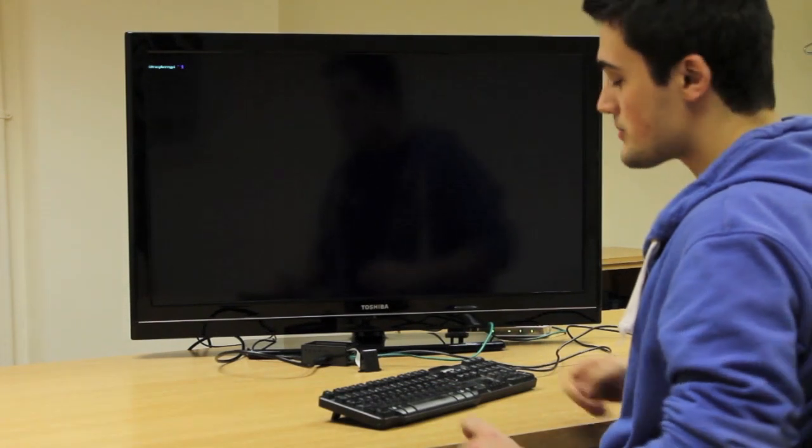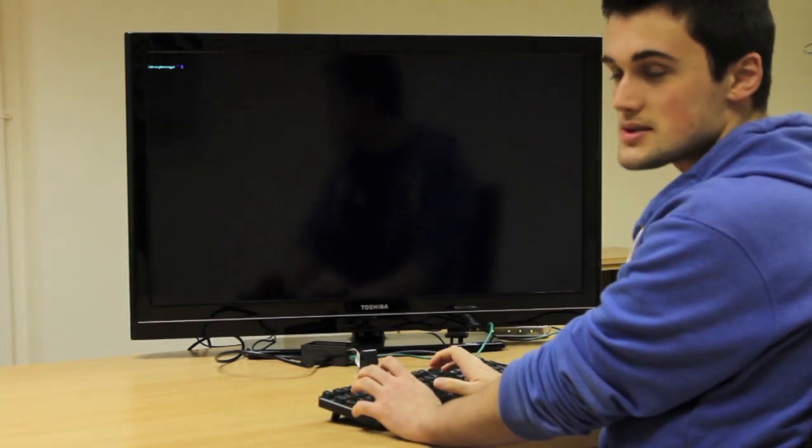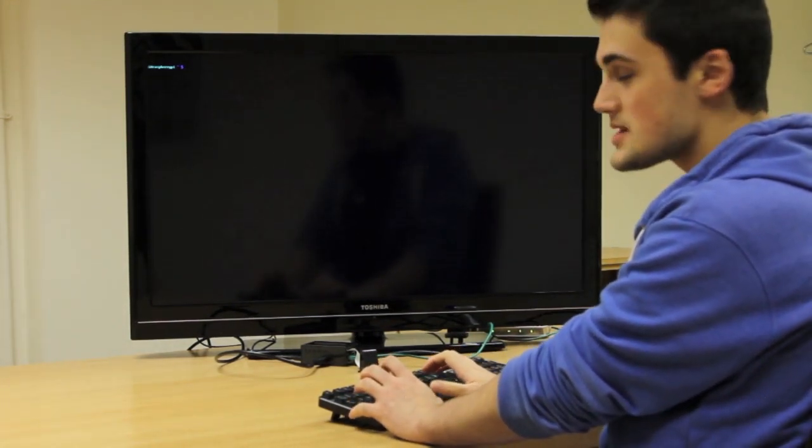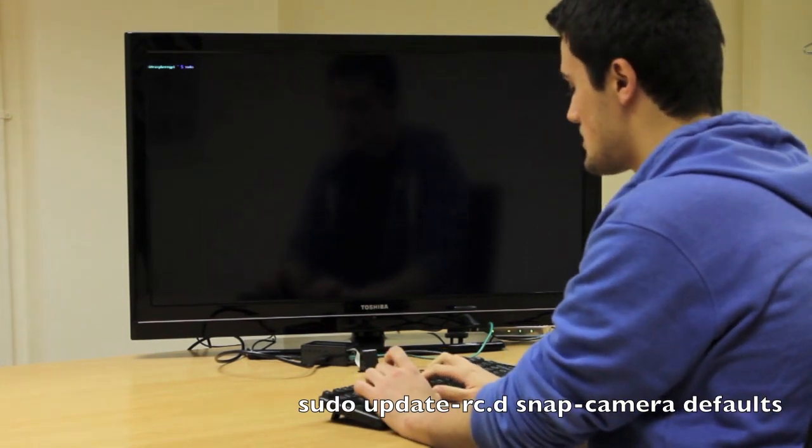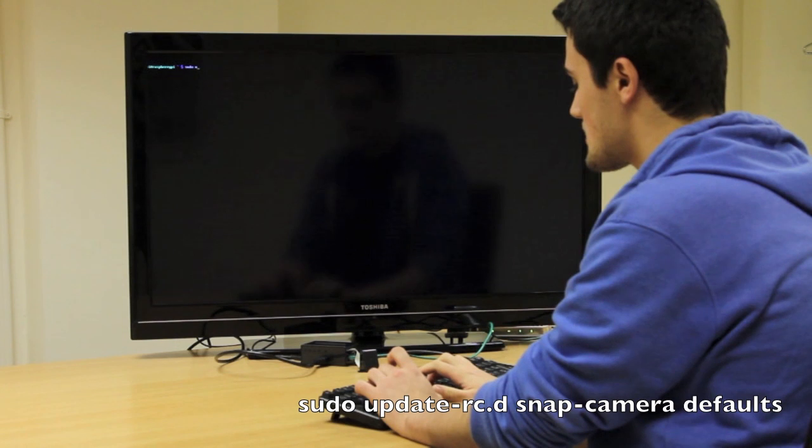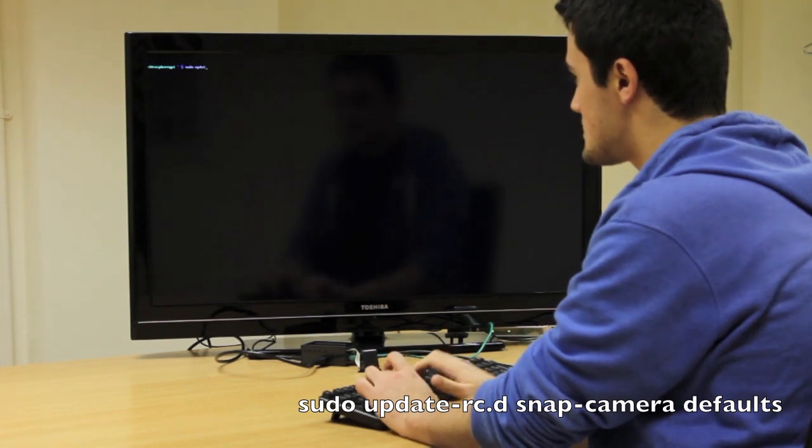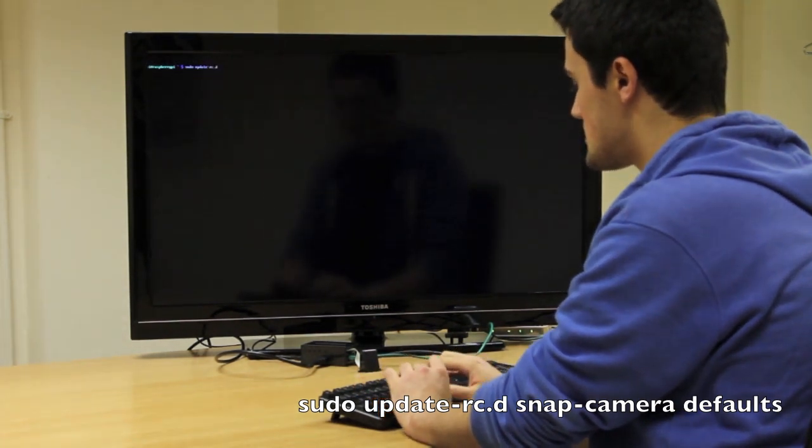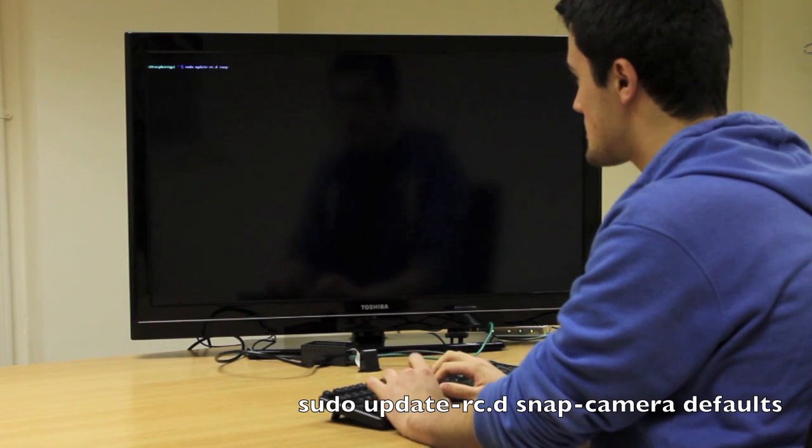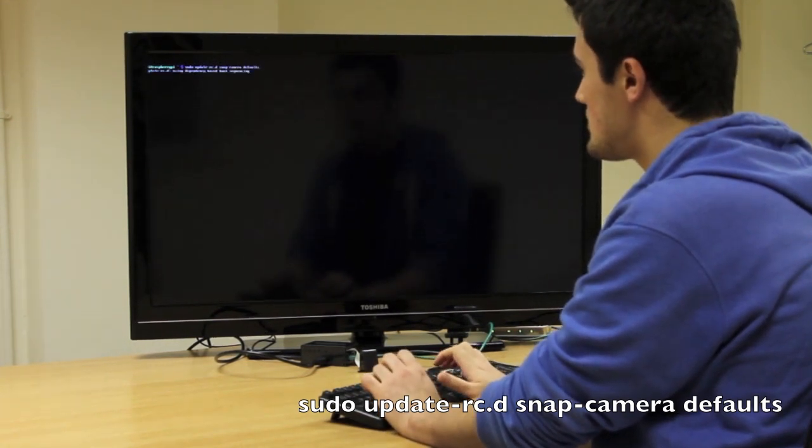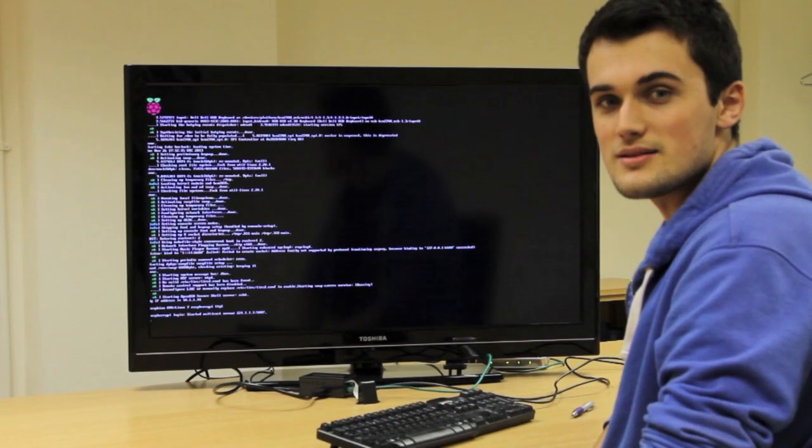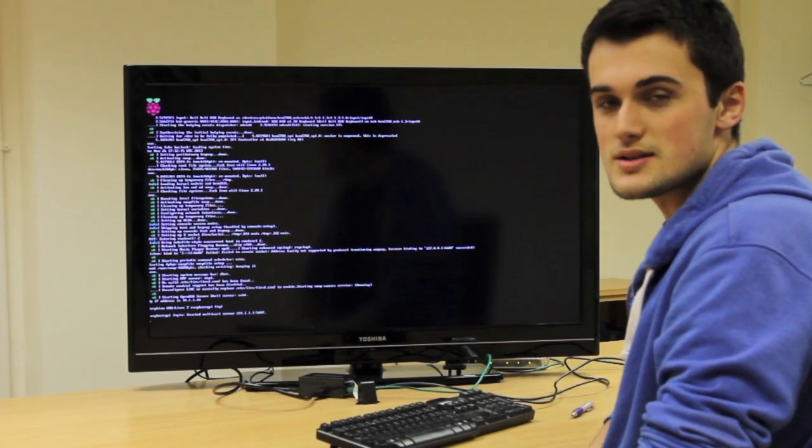So we've rebooted and logged back on, and now we're going to update the service so that snap camera starts up from boot. We're going to do sudo update-rc.d snap-camera defaults. We've installed snap camera and made sure it starts up from boot.